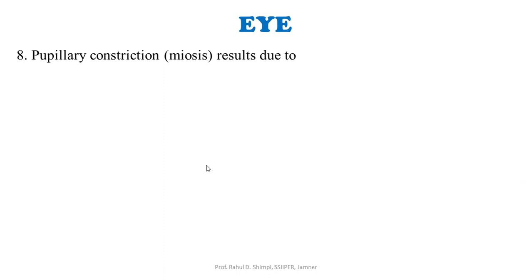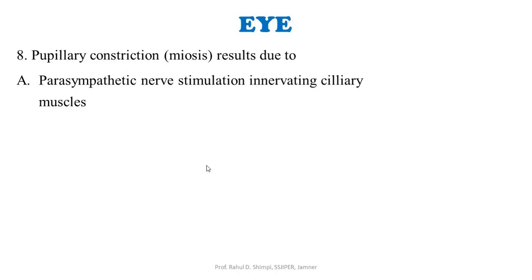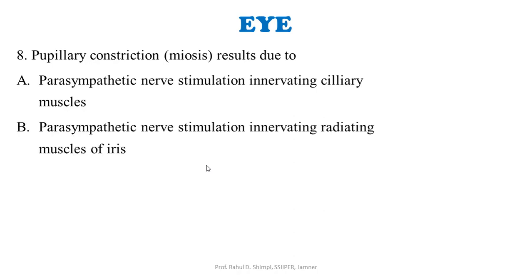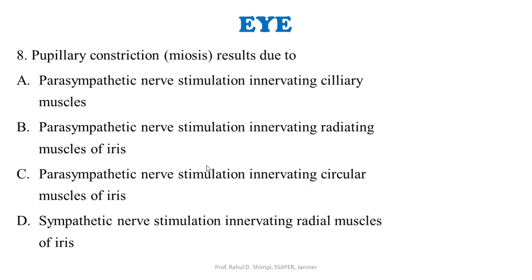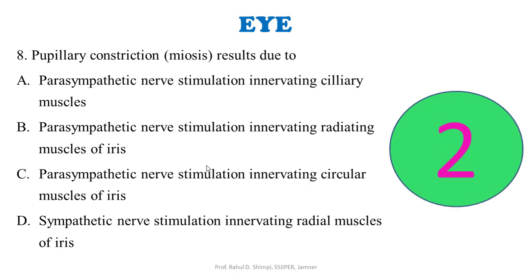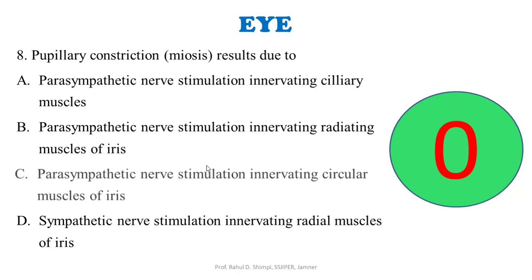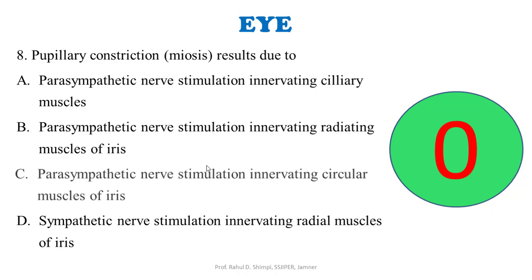Pupillary constriction, that is miosis, results due to: A: parasympathetic nerve stimulation innervating ciliary muscles. B: parasympathetic nerve stimulation innervating circular muscles of iris. C: parasympathetic nerve stimulation innervating radial muscles of iris. D: sympathetic nerve stimulation innervating radial muscles of iris. The correct answer is parasympathetic nerve stimulation, which causes circular muscles of the iris to constrict, resulting in a decrease in pupillary dimensions — known as miosis.